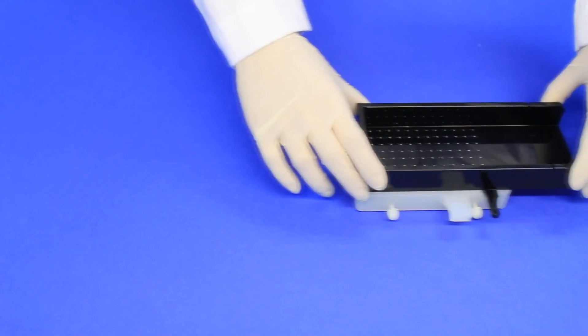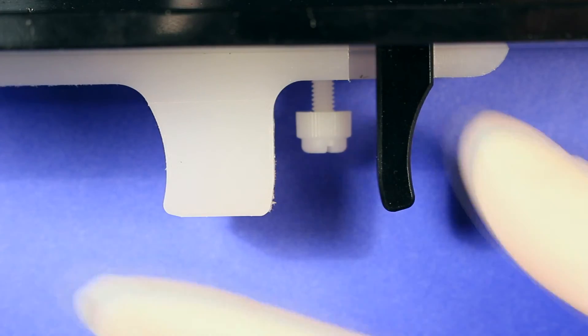Place the dispenser over the microplate. Engage the release bar and the stir elements will fall into the wells of the microplate.